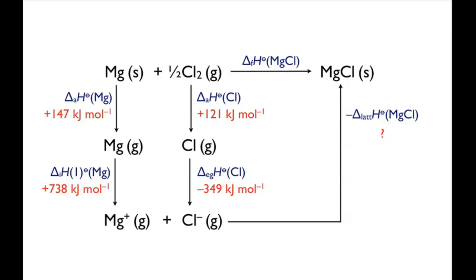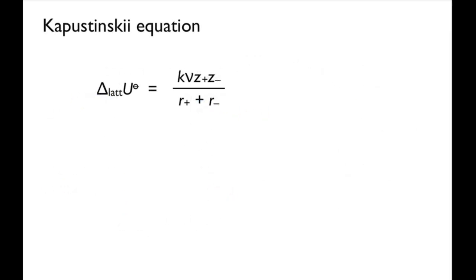The fifth value, the magnesium chloride lattice enthalpy, presents a bit of a problem, since if the compound doesn't exist, how can we know its lattice enthalpy? Fortunately, we can estimate it using the Kapustynski equation.